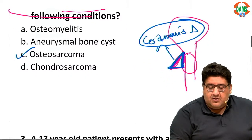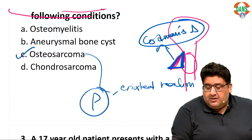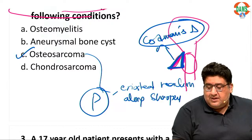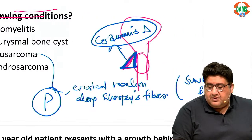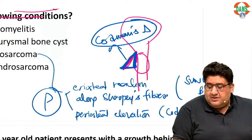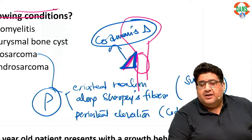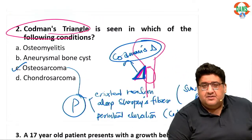In osteosarcoma, I always tell my students to remember these two P's. The first P is periosteal reaction along the Sharpey's fibers — this is what is called Sunray or Sunburst appearance. The second P is periosteal elevation, which is basically Codman's triangle. So that is basically about the second question.